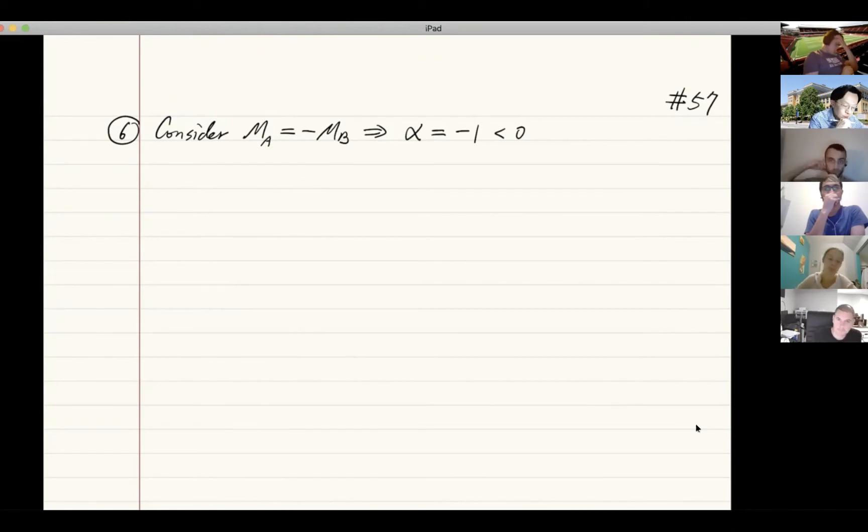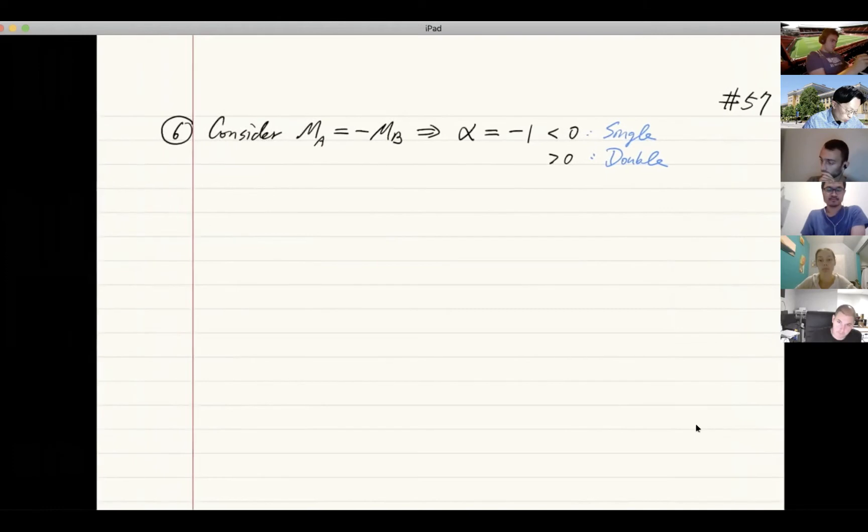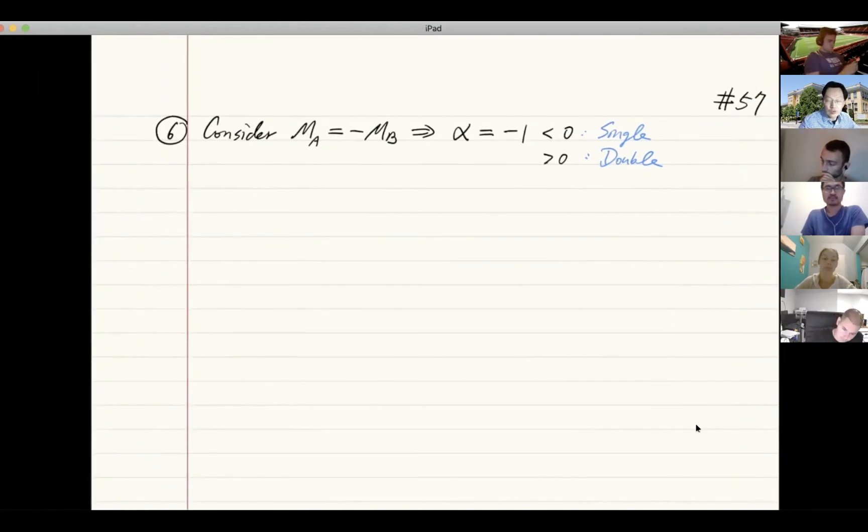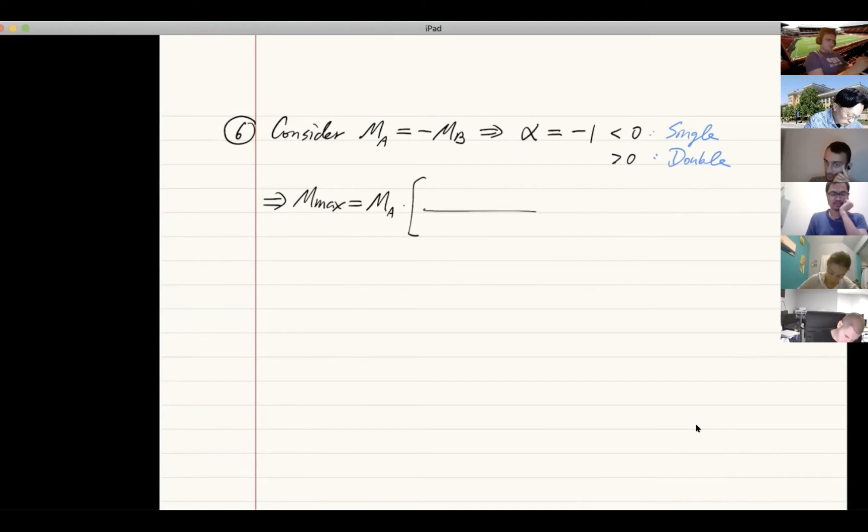What is the sign of this? Is it single curvature or double curvature? When alpha is less than zero, it is single curvature. When it's greater than zero, it's double. That's another way to determine it. If we make MA equal to negative MB, the expression of the maximum moment can be further simplified.